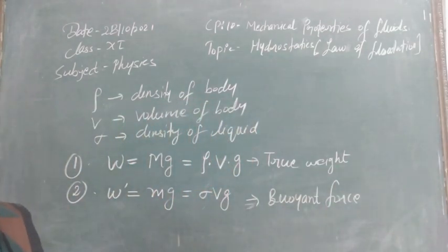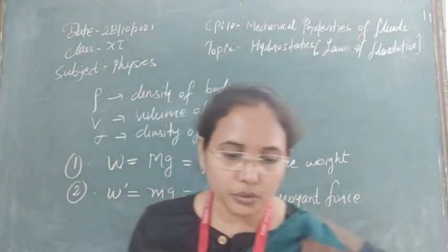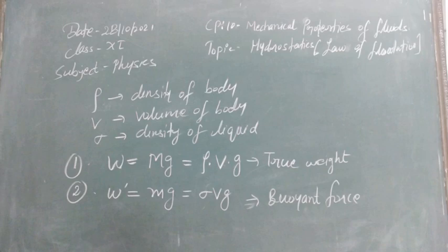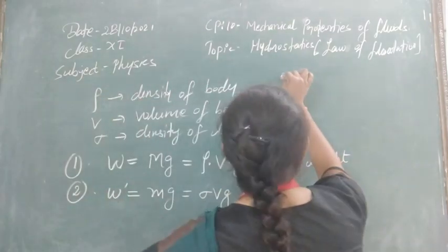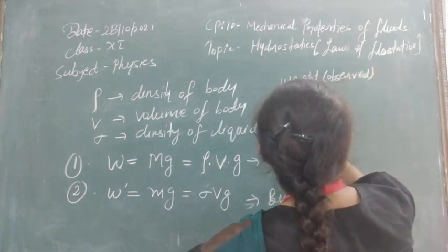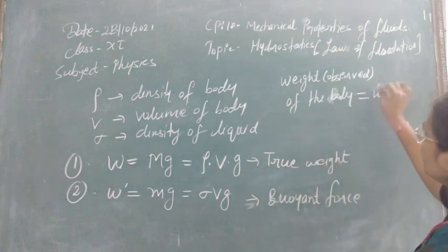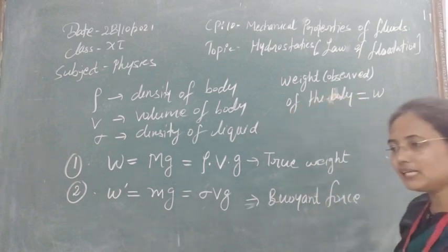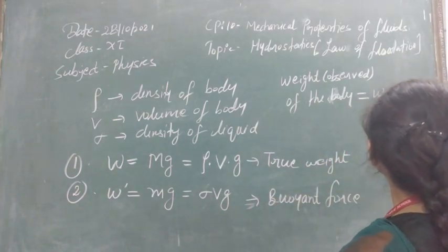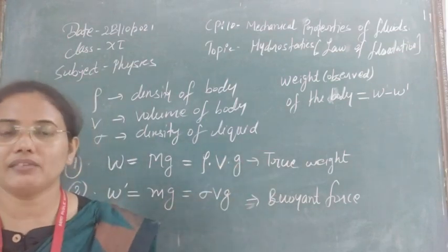So two forces act on the system: the true weight of the body acting downward and the buoyant force acting upward. The observed weight of the body equals the true weight minus the buoyant force. Since the body is completely inside, the true weight is greater than the buoyant force, so we take their difference. The observed weight is the simple difference of true weight and buoyant force.